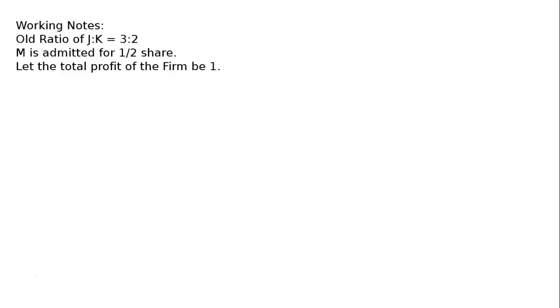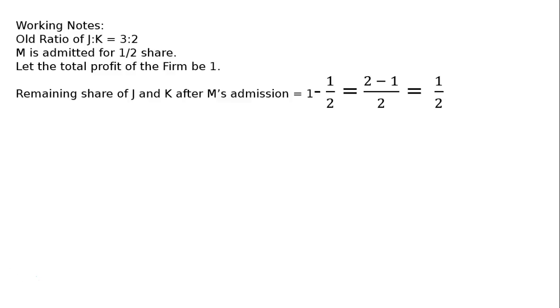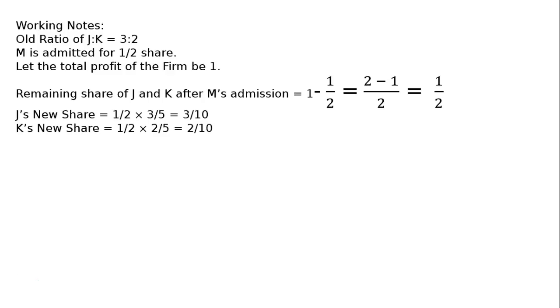Working notes for Case A: Old ratio of J and K is 3 to 2. M is admitted for one-half share. Let the total profit of the firm be 1. Remaining share of J and K after M's admission is 1 minus 1/2, equal to 1/2. J's new share is 1/2 multiplied by 3/5, equal to 3/10. K's new share is 1/2 multiplied by 2/5, equal to 2/10.